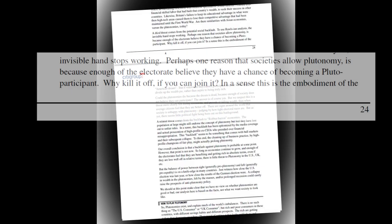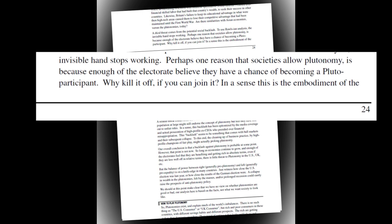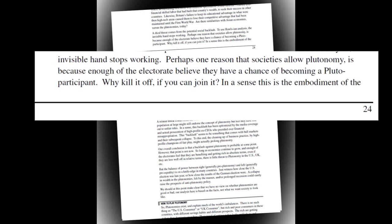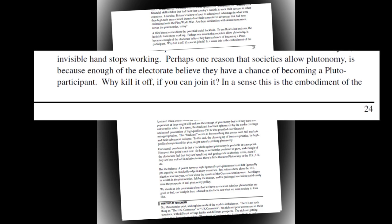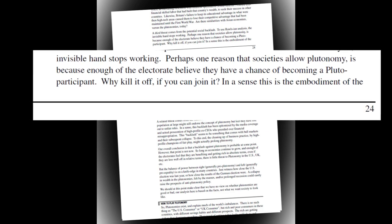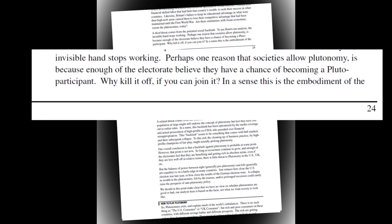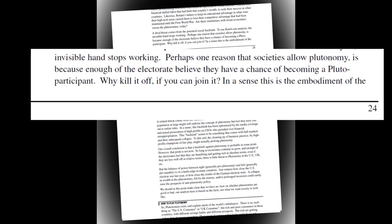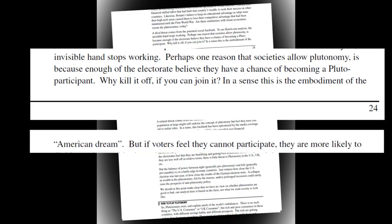Which leads to the question, why do so many working-class people passively accept such a blatantly unfavorable situation? Citigroup itself asked this question and attempted to provide an answer. Perhaps one reason that societies allow plutonomy is because enough of the electorate believe they have a chance of becoming a Pluto participant. Why kill it off if you can join it? In a sense, this is the embodiment of the American dream. American dream? More like American scheme. Am I right, ladies?